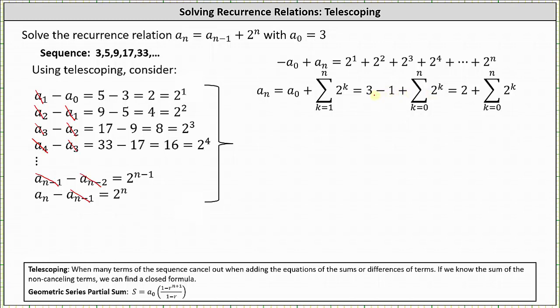This gives us the equation a_n equals two plus the sum from k equals zero to n of two to the power of k. Because we have a sum of a geometric sequence, we can determine the closed formula using either the geometric series partial sum formula or the multiply, shift, and subtract method shown in our text. I'm going to go ahead and show both methods.